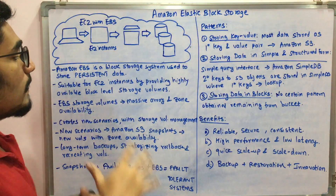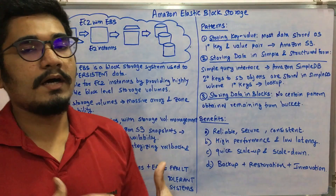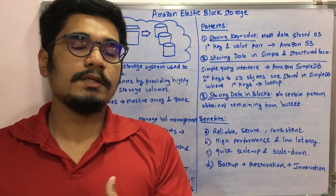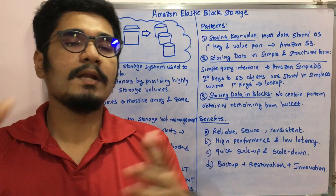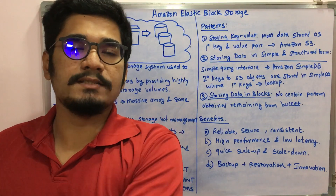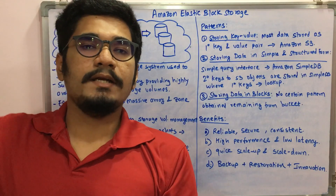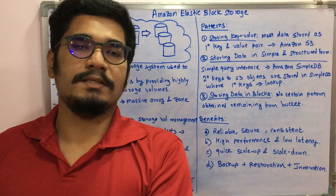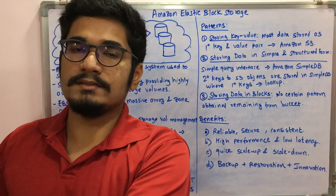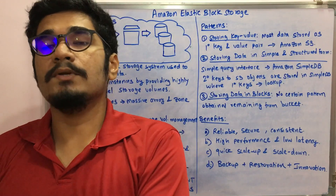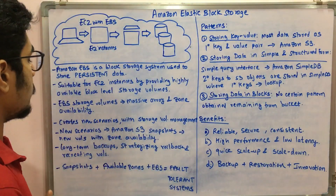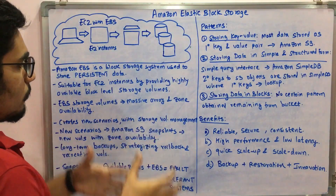EBS storage volumes are arranged in a massive array with various kinds of zone availability. Zone availability means that at a particular location where data is not available, it may be replicated to multiple places. For example, if the main data center is in Hamburg, it may be replicated to Dusseldorf, New York, or Paris. So if a node failure happens at one place, the data can be available from other zones — that's zone availability, achievable with EBS.